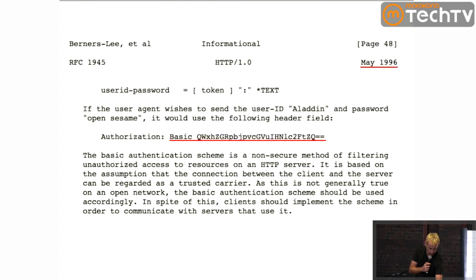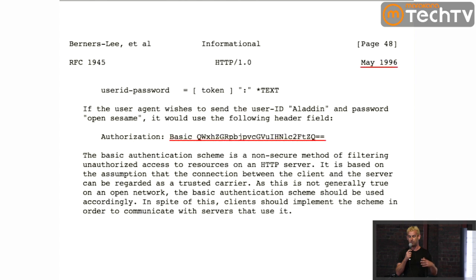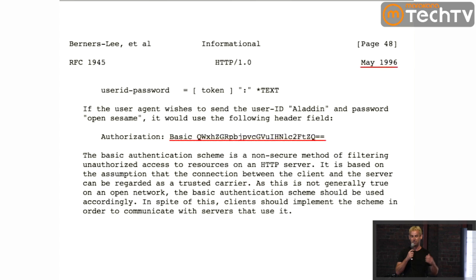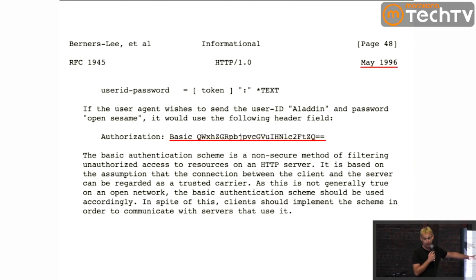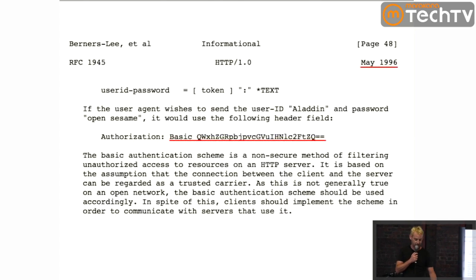But there's a problem with that model: to authenticate with an application, you have to give that application a username and password so it can send it over the wire. What you see here is the username and password — it's not encrypted, it's base64, so it's basically clear text.